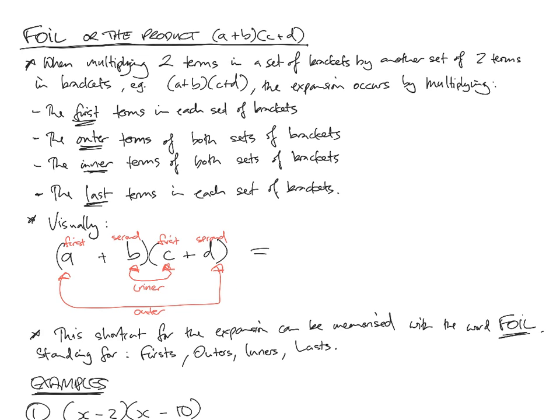So a shortcut to expanding that is: it is the first terms in each set of brackets multiplied together, so A times C; the outer terms of both sets of brackets, so A times D; add the inners, which were B and C, so B times C; and lastly the last term in each of the two brackets were B and D, so B times D.